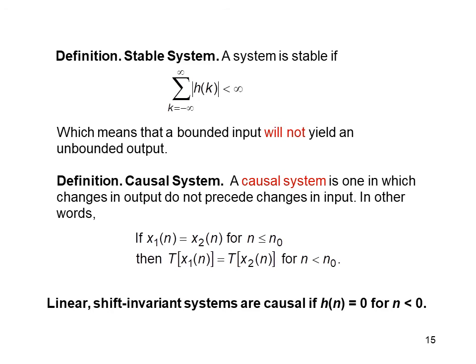Now we define what is a stable system. A system is said to be stable if the summation from minus infinity to plus infinity of |h[k]| is less than infinity, which means that a bounded input will not yield an unbounded output. The definition of a causal system is one in which changes in output do not precede changes in input. In other words, if x1[n] equals x2[n] for n less than n0, then T(x1[n]) equals T(x2[n]) for n less than n0. A linear and shift invariant system is causal if h[n] equals 0 for n less than 0.